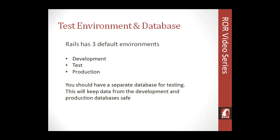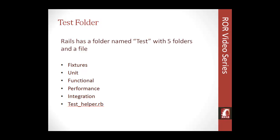Let's talk about the test environment and database. As you probably know from following this series, Rails has three environments: development, test, and production. So far we've been dealing with the development environment, and we have the production environment on Heroku. We haven't created a separate test database yet, but we'll be doing that in the next section. When using Heroku they tell you to use one database for all three, but that's only for the remote app — locally you can have multiple databases.